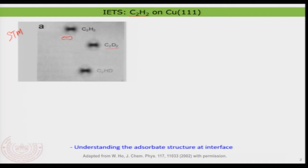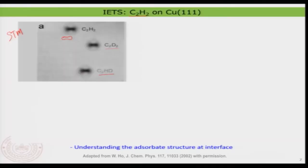A few additional images are also shown on the same surface. Also shown is an isotope species where hydrogen is replaced with deuterium, making C2D2 and C2HD. So a mixture of ethylene and deuterated ethylene is deposited on the copper 111 surface. You can see the shape is roughly similar, but you are unable to detect whether the molecule is C2H2, C2D2, or C2HD — that is the question. How can we do a chemical fingerprinting of the molecule?